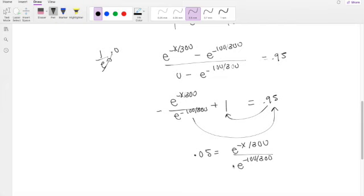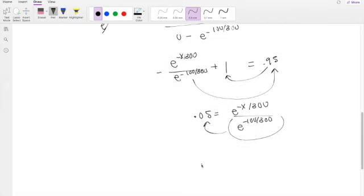I'm going to multiply this to this side, which is approximately 0.0358, equals e to the negative x over 300. So I can take the natural log on both sides. Natural log of 0.0358 equals negative x over 300.